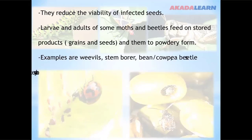Examples of boring and chewing insect pests are weevils, stem borers, bean or cowpea beetles, yam beetles, cotton bollworm, and many more.